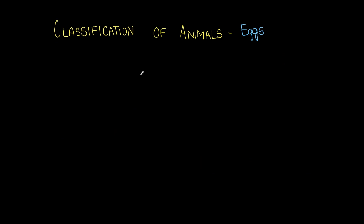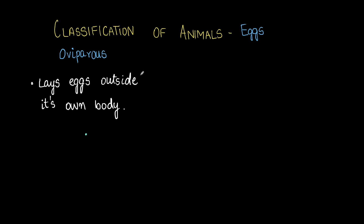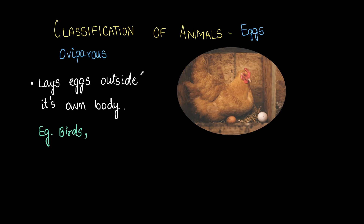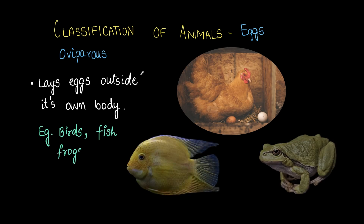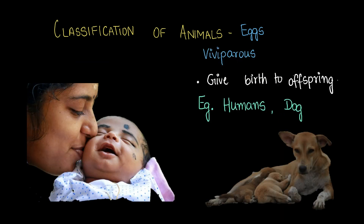Next we're going to classify animals on the basis of whether they lay eggs or not. Oviparous animals lay eggs outside their own body — examples include almost all birds like hens, as well as fish and frogs. On the other hand, viviparous animals give birth to their young ones — examples include humans and dogs, where the mother gives birth to a litter of puppies.